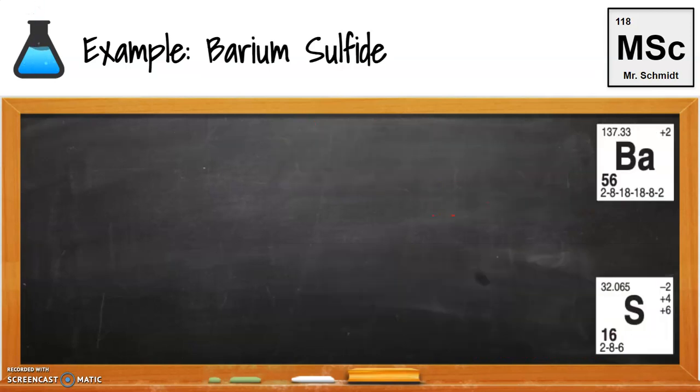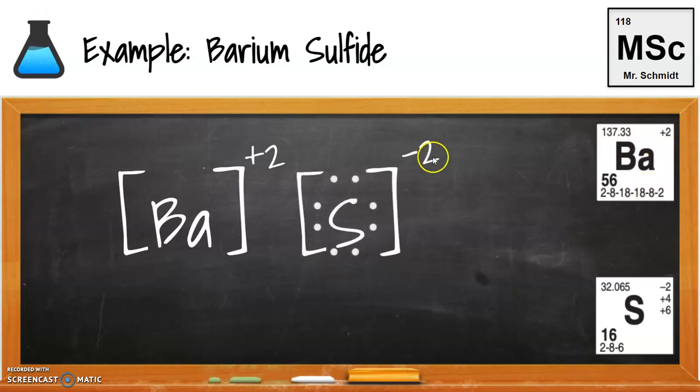Again, example here for barium sulfide. So barium has a plus two charge, okay, when it forms an ion. Sulfur has a minus two charge when it forms an ion. Plus two, minus two equals zero.